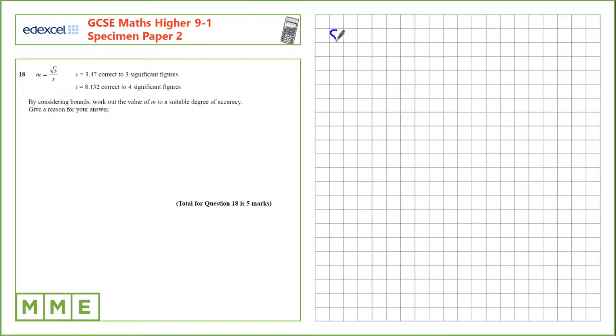Let's look at s first. So, s is 3.47, correct to three significant figures. So, the upper bound is going to be 3.475. I've got a strictly less than symbol here because if it was this value, it would round up to 3.48. For less than, the lower bound is 3.465.